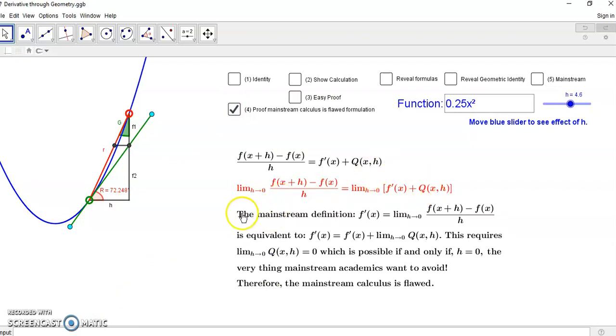So where does the problem come in in the mainstream? What the mainstream academics do in their ignorance, their grand ignorance the last 400 years, is they take a limit of both sides. But if you take a limit of both sides then this doesn't change because these are both constant values. So what happens here is they decide oh we're going to keep this constant and we're going to let this go to zero.